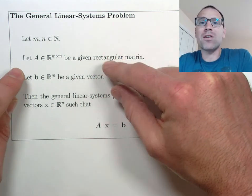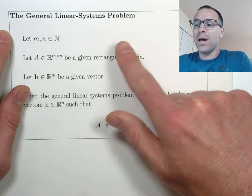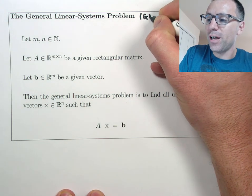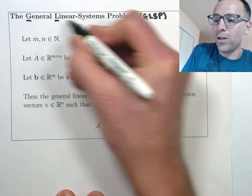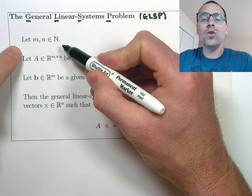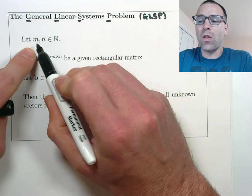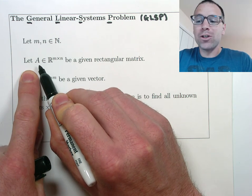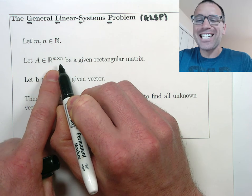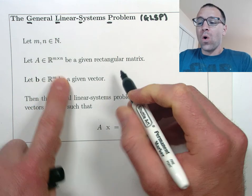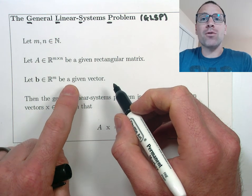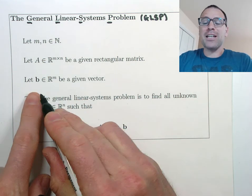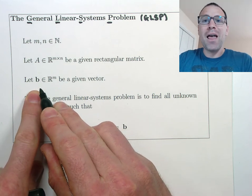I love to break down problem statements by individual assumptions, so I'm going to do that in this video. When we're defining the general linear systems problem, or what I like to call the GLSP, we're going to start with two natural numbers, also known as positive integers. We'll call them M as in mango and N as in November. We also suppose that we're given a rectangular matrix A that has M rows and N columns. The other thing that we are given is a right-hand side vector B that has M rows.